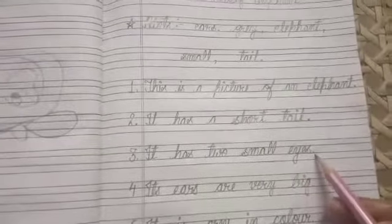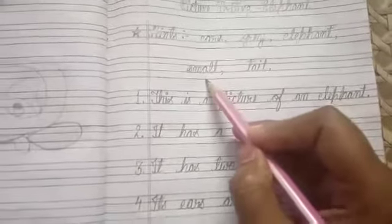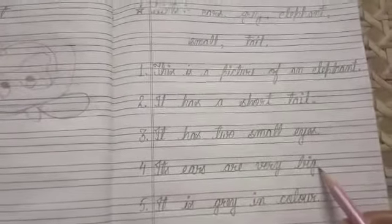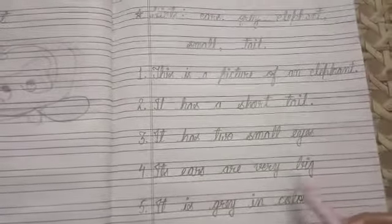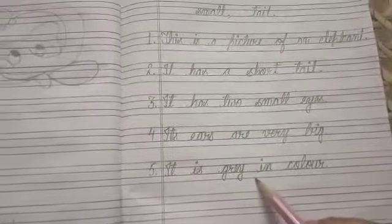Number four, its ears are very big, full stop. Ears are already given in the hint box. Number five, and last, it is gray in color, full stop. Gray is already given in the hint box.